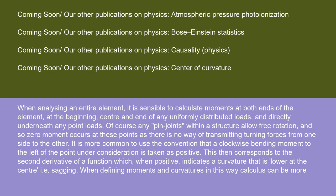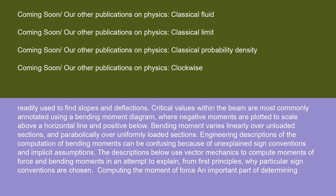It is more common to use the convention that a clockwise bending moment to the left of the point under consideration is taken as positive. This then corresponds to the second derivative of a function, which, when positive, indicates a curvature that is lower at the center, i.e. sagging. When defining moments and curvatures in this way, calculus can be more readily used to find slopes and deflections. Critical values within the beam are most commonly annotated using a bending moment diagram, where negative moments are plotted to scale above a horizontal line and positive below. Bending moment varies linearly over unloaded sections and parabolically over uniformly loaded sections.